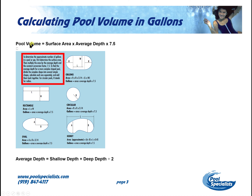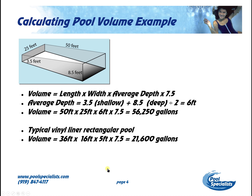You need to understand the surface area and then figure out the average depth. The average depth is going to be the depth of your shallow end plus the depth of your deep end, divided by two. Here is a very simple example: our shallow depth is three and a half feet, our deep depth is eight and a half feet — add those together and divide by two, and we get six feet.